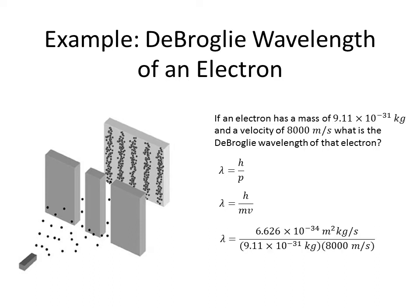And we substitute in all of our numbers. We see that h is 6.626 times 10 to the minus 34th meters squared kilograms per second. We divide that by the mass, 9.11 times 10 to the minus 31st kilograms, and we also divide by the velocity, 8,000 meters per second.